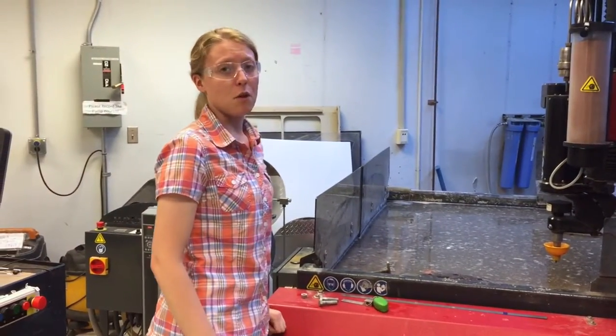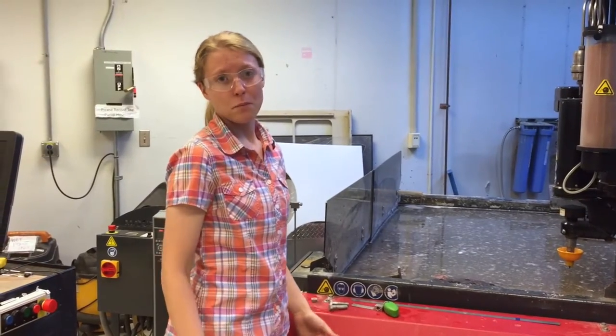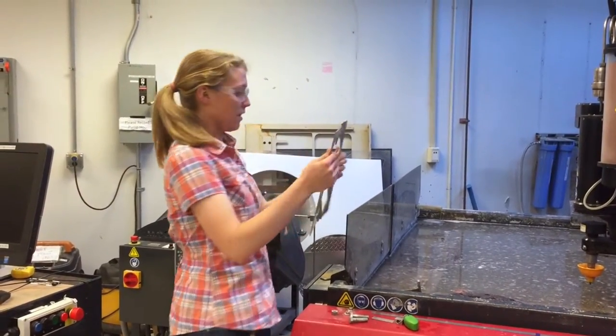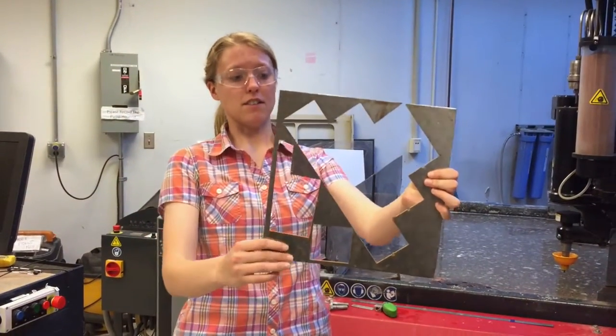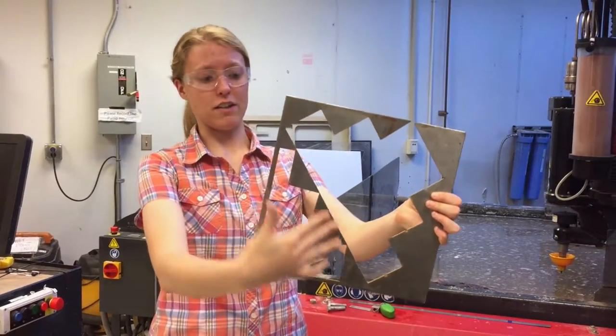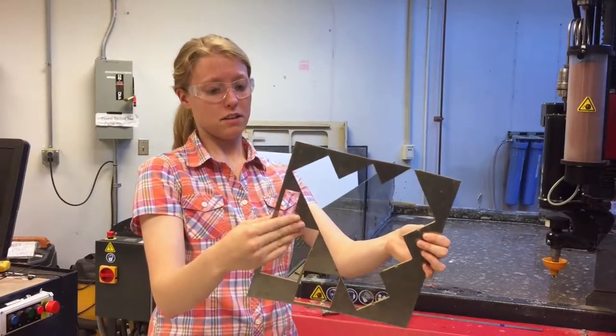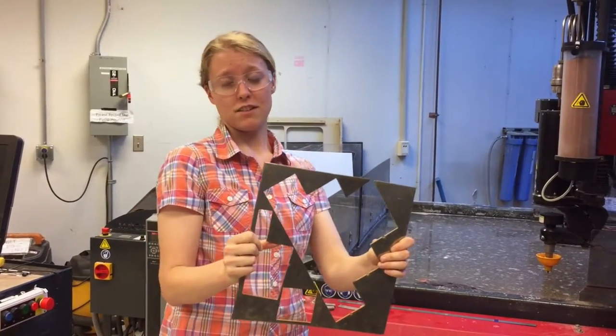This water jet can cut through almost any material including metal, plastic, you name it. Here's an example part that we've cut out. This is a piece of steel. You can cut out any shape, any 2D profile that you want. Makes it much easier than any other method.